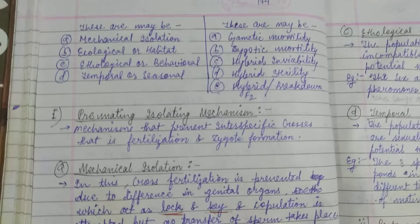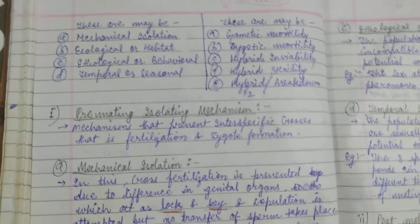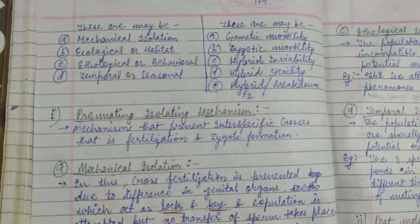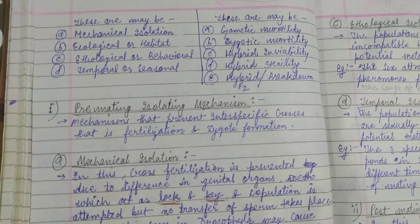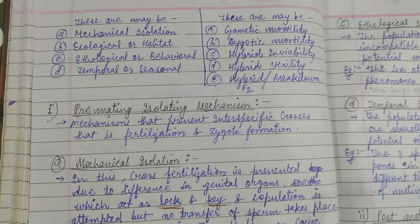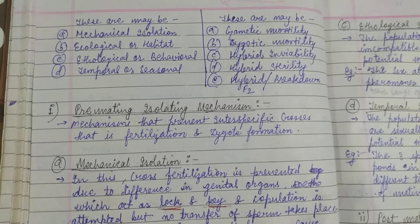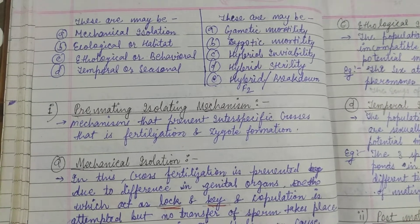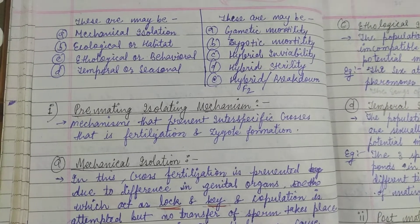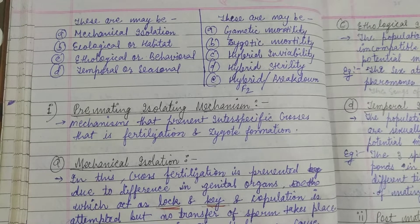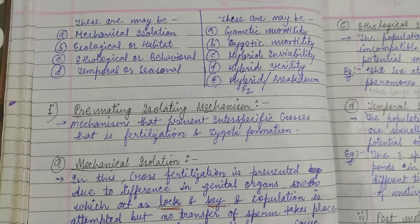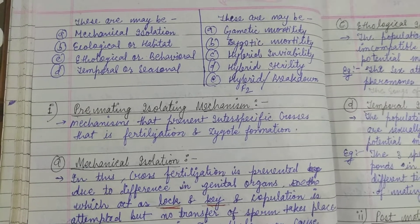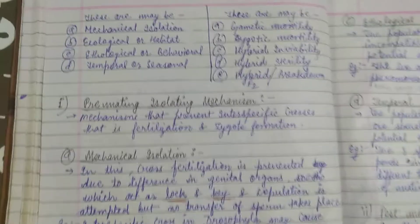The types of pre-mating isolation are: mechanical isolation, ecological, habitat, ethological, behavioral, temporal, and seasonal. Post-mating types are: gametic mortality, zygotic mortality, hybrid inviability, hybrid sterility, and hybrid breakdown.